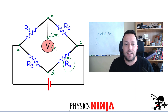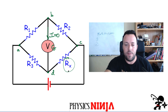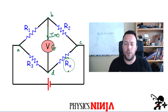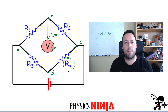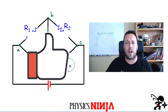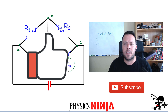When the bridge is balanced I can actually solve for the value of this unknown resistance. I'm going to show you how to get the value of Rx in terms of the other three resistors, and we're going to do a couple of problems together. I'll give you three sample problems at the end. Like all my videos, if you like it give it a thumbs up. Consider subscribing to my channel, and if you have any questions leave them in the comments section.